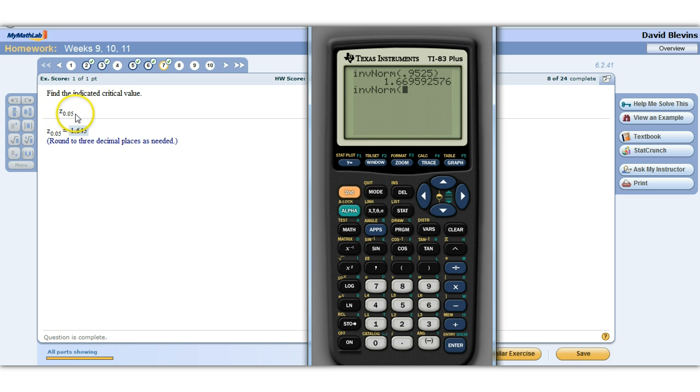So we're looking for the z-score to the right of this 0.05. We need the area to the left. So we need to subtract that from 1, 1 minus 0.05, and hit enter.